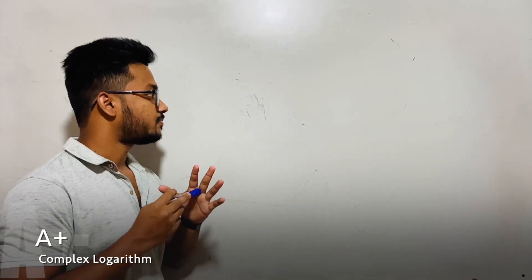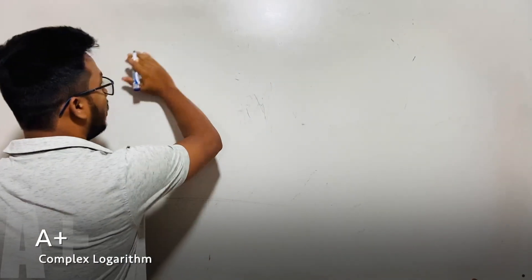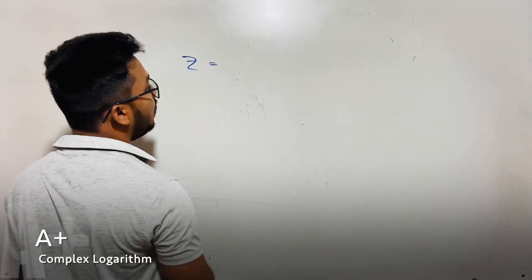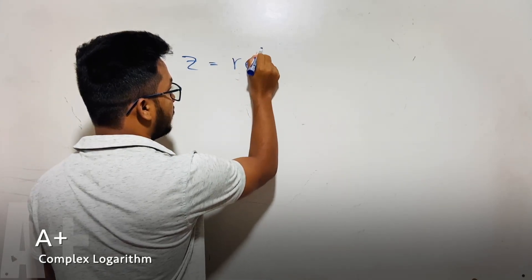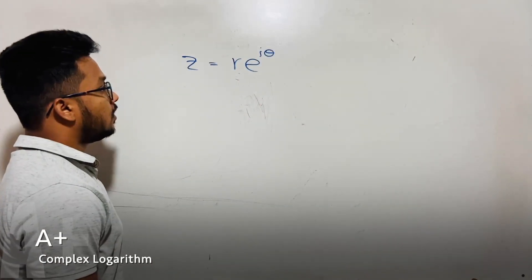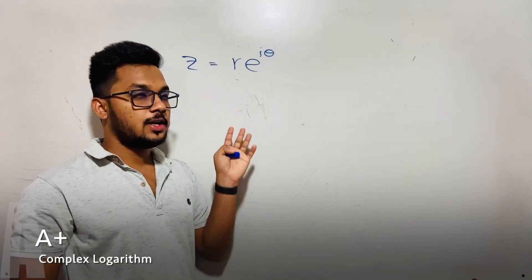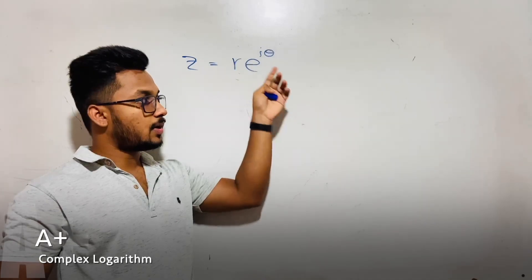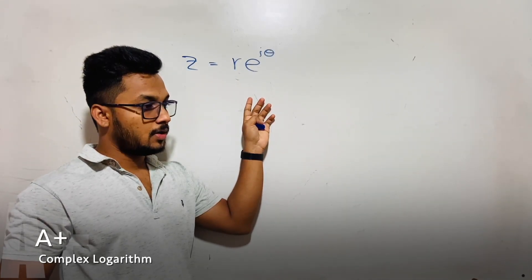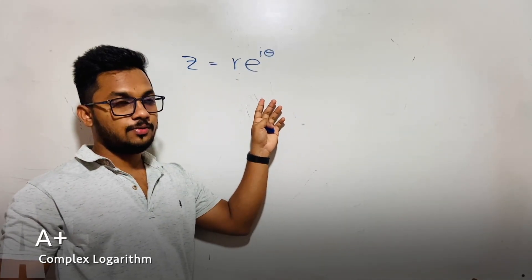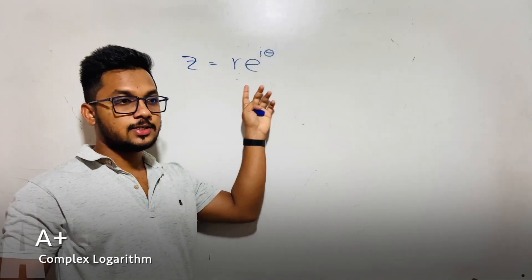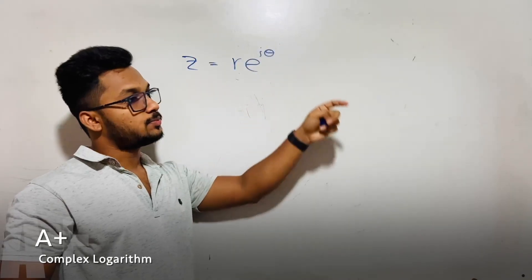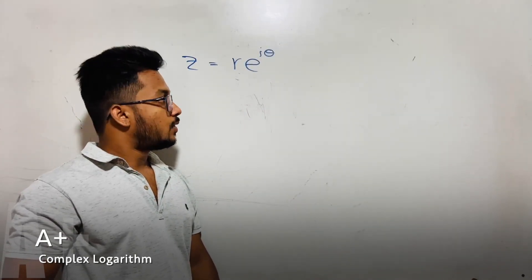Okay, so let's begin with this simple complex number z equals r e to the i theta. We generally know there are three types of complex numbers we can write. First one is the general form, we say coordination form. Second one is the polar form, and this is the exponential method.